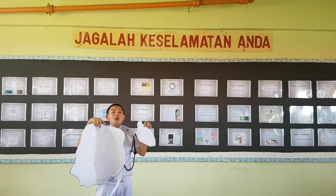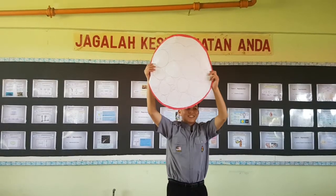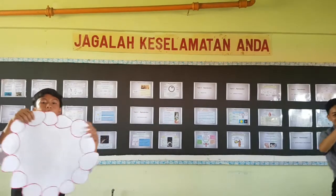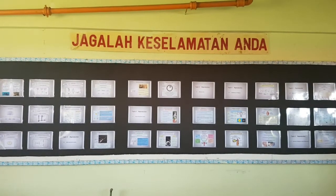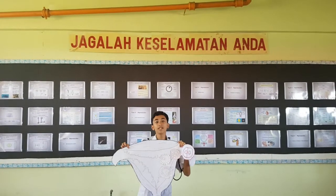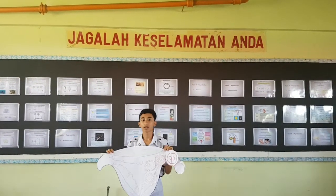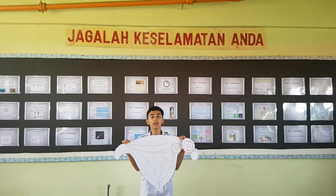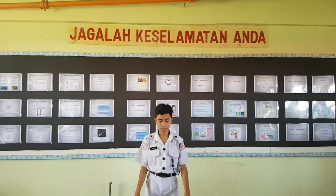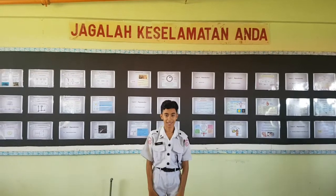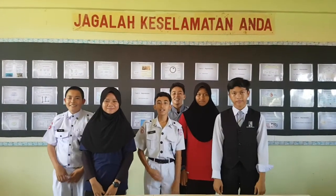To recap: sperm and ovum come together, forming a zygote, then a ball of cells, then an embryo, and finally an embryo with a placenta. That is all of the processes occurring with implantation. Sperm and ovum come together during fertilization. That's all from us. Thank you.